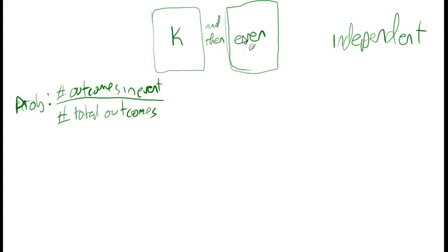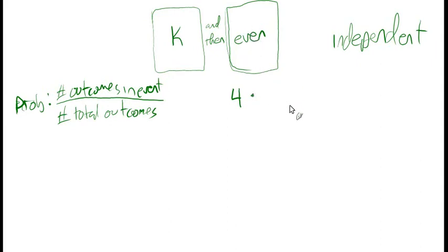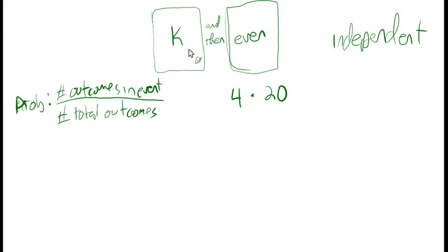So the number of ways you can pick two cards — if we can count the number of outcomes in the event and the number of total outcomes overall, we'll have the probability we're looking for. How many ways are there to get a king and then an even? This is the Fundamental Counting Principle from 10.1. There are four kings, so four ways to get a king. For even-numbered cards: 2, 4, 6, 8, and 10 in any suit — that's five per suit times four suits, giving twenty even-numbered cards. So there are 4 × 20 = 80 ways to get a king and then an even.